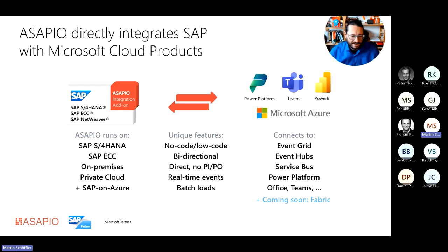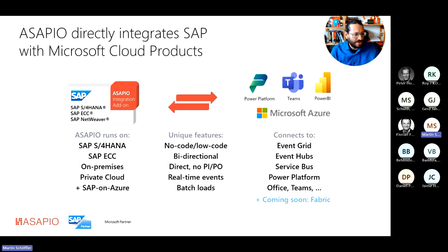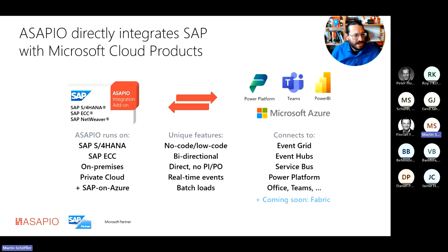There are typically multiple consumers — there might be an analytics consumer, but there might also be an application, either a third-party or a homegrown custom application on the cloud that needs that information. With the typical Event Hub pub/sub approach, you can communicate the info once and have multiple consumers receiving it. We will see a few examples in our demos.